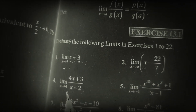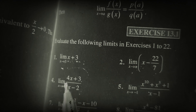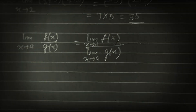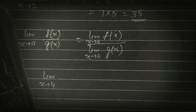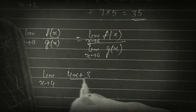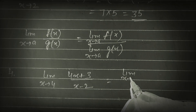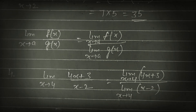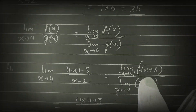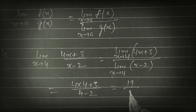Look at question number 4: limit x tends to 4 of (4x + 3) upon (x − 2). We apply limit on numerator and denominator. Numerator: 4×4 + 3 = 16 + 3 = 19. Denominator: 4 − 2 = 2. So the answer is 19/2.